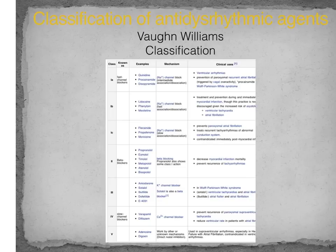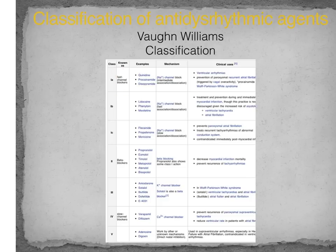Here's a table I have from Wikipedia — it is an accurate table and an interesting way of looking at the medications. The classification starts at Class 1, with subclasses 1A, 1B, and 1C. Collectively, all Class 1 agents block sodium channels — some block fast sodium channels and some block intermediate or slow sodium channels.